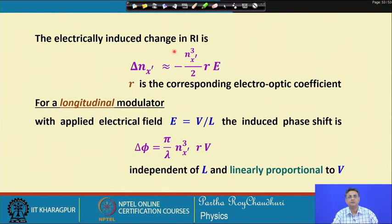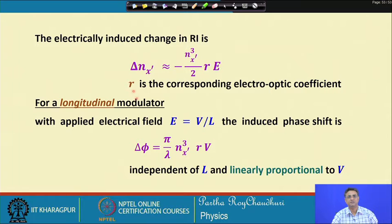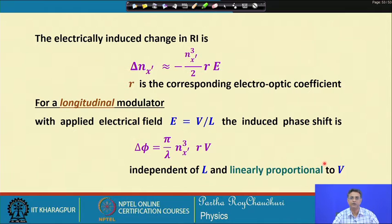The electrically induced change in refractive index is delta-n_x; the new refractive index is n_0 plus this externally-induced change. For the longitudinal case, the induced phase delta-phi is this quantity multiplied by k_0 and the crystal length L. Writing E = V/L, the modulated phase is independent of length L and is linearly proportional to V — so as you modulate V the phase will also be modulated.